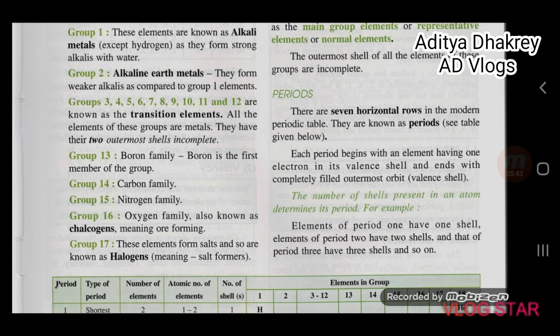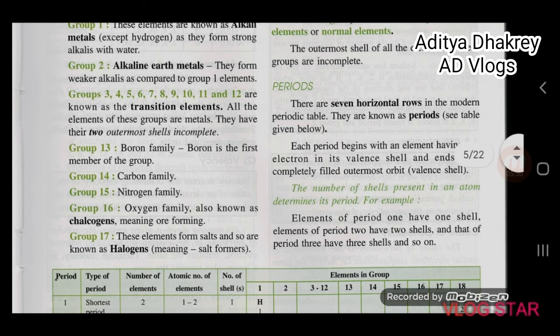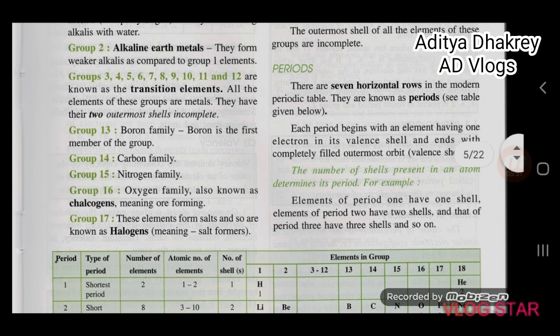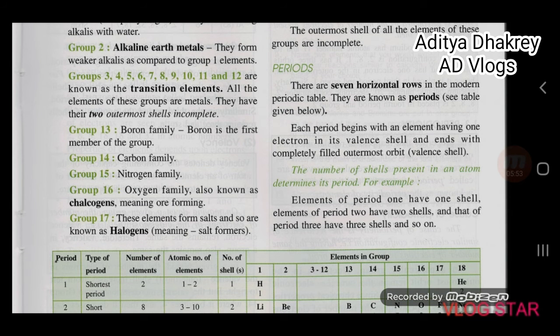Group 13 is the Boron family; boron is the first member of this group. Group 14 is the Carbon family. Group 15 is the Nitrogen family. Group 16 is the Oxygen family, also known as chalcogens, meaning ore-forming.